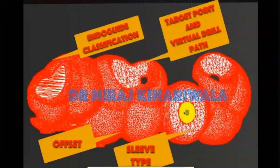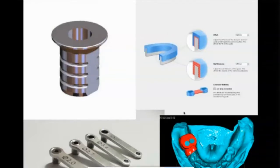Another parameter is offset: the distance between your guide and the tooth. If the offset is too small, it is difficult to place the guide; if too high, your guide will be inaccurate. We typically keep offset at 1.5 mm. Also important is the use of a sleeve: whether sleeveless or with a sleeve, and if using a sleeve, the diameter must match the drill diameter precisely. Wall thickness is also critical — if the guide is too thin it can break; if too thick, it becomes inconvenient for the patient.